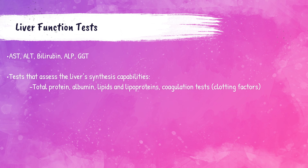A liver function test panel or hepatic panel usually includes bilirubin, AST, ALT, and ALP — which were discussed in the enzymes and cardiac marker lecture. GGT, also discussed in that lecture, can additionally be used to assess liver function. In addition to these liver function tests, other tests including total protein, albumin, lipids, and coagulation tests can also be run to help assess the liver's synthesizing capabilities.